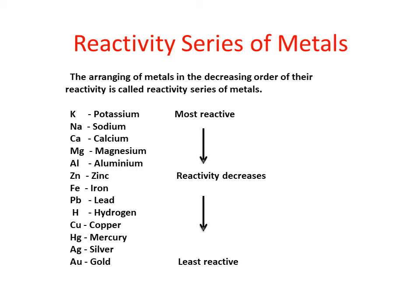Now what is the reactivity series of metals? The arranging of metals in decreasing order of reactivity is called the reactivity series of metals. We have the most reactive elements at the top, followed by elements with lesser reactivity, and at the end the least reactive metals. The most reactive metals are potassium, sodium, calcium, magnesium, and aluminium. Then after zinc the reactivity starts decreasing, and the least reactive metals are gold, silver, and mercury.